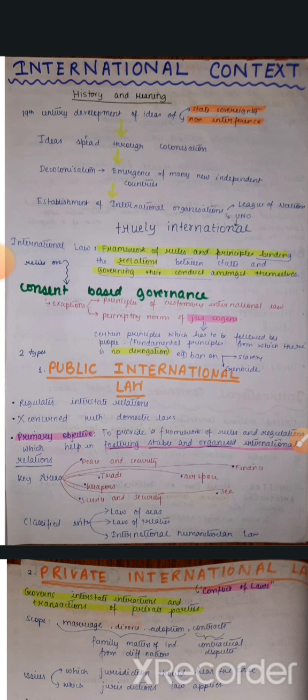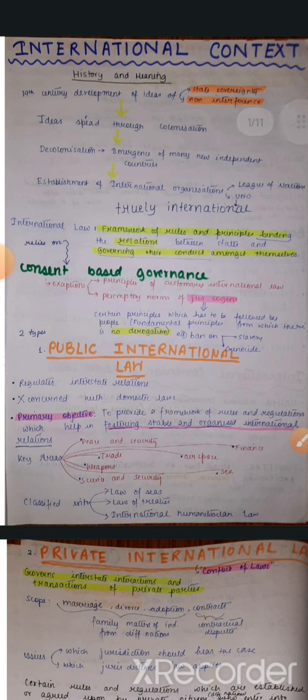Jaise ki India mein jo Lok Sabha, Rajya Sabha hai — yahan pe public international law nahi bante. Ye international conferences mein bante hain, jaise ki UN ki jo conferences hain, ya phir kuch aur international organizations jaise ASEAN, SARC, BRICS. Ye saare platforms mein humare public international law bante hain. ICJ — International Court of Justice, established in 1946 — ye saari jagah pe ye saare laws bante hain.